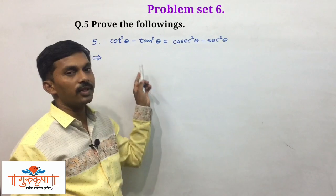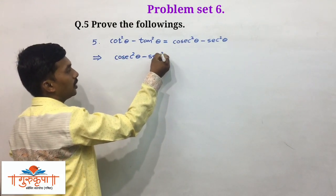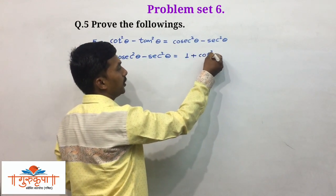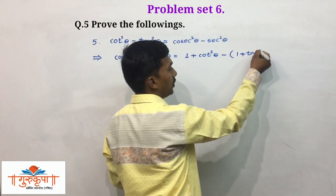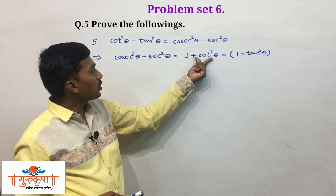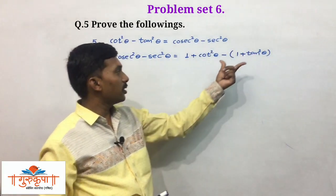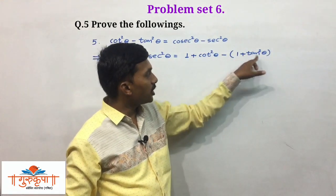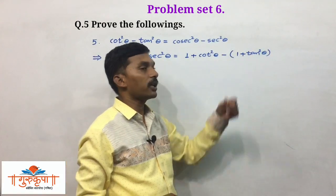We write RHS: cosec squared theta minus sec squared theta equals. In place of cosec squared theta we write (1 plus cot squared theta), and in place of sec squared theta we write (1 plus tan squared theta). It is very important to put the bracket here since we have to multiply each and every term by the minus sign — if you do not draw the bracket, you will not multiply every term by that sign. So we have (1 plus cot squared theta) minus (1 plus tan squared theta).